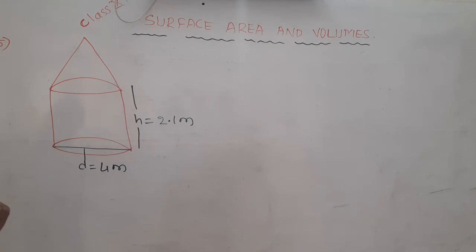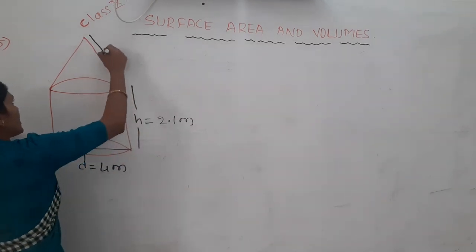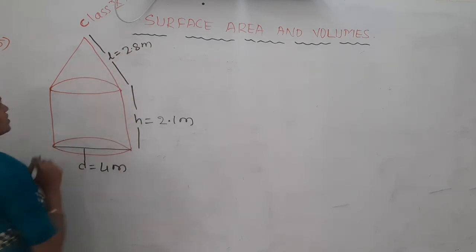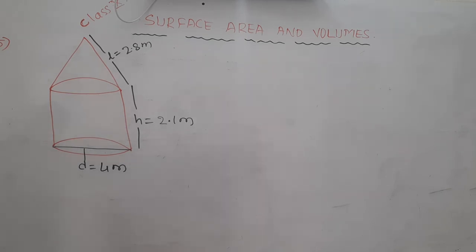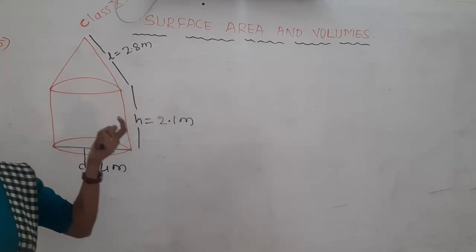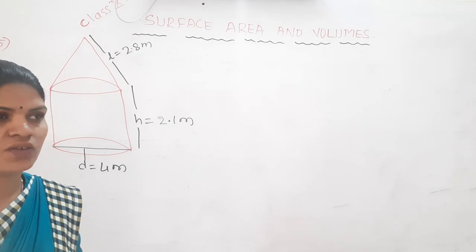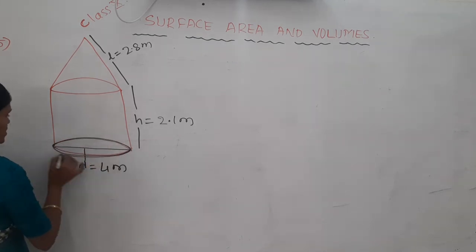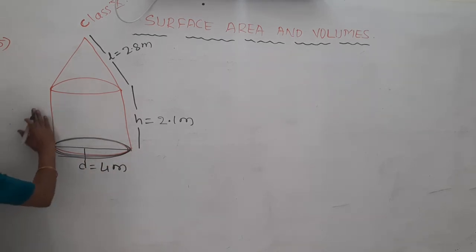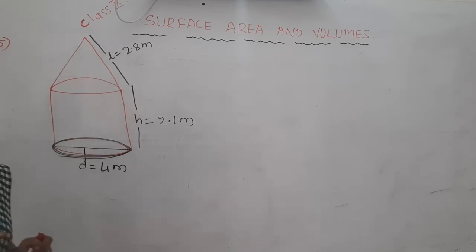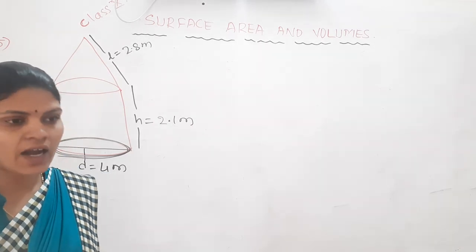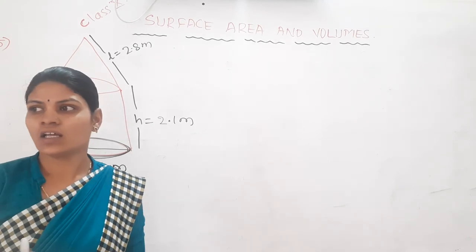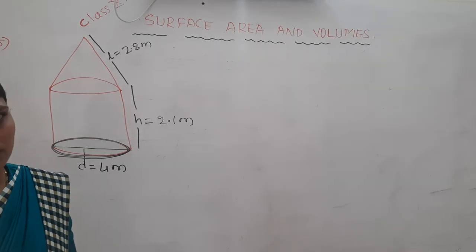If 1 meter square of canvas costs 500 rupees, find the total cost. Note that no canvas is used for the base. The area of canvas equals the curved surface area of the cylinder plus curved surface area of the cone. The diameter of the cone is the same as the cylinder: 4 meters, so radius is 2 meters.